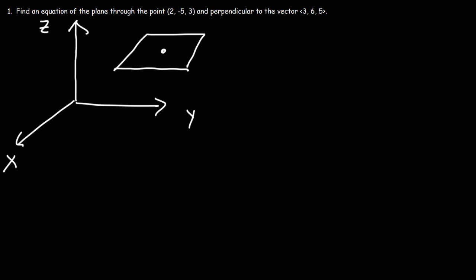Now that's going to be the point P naught. And we're going to have a vector that is perpendicular to that point. We're going to call that N. And we're going to have a position vector that starts from the origin going to P0. So we're going to call this R sub 0.